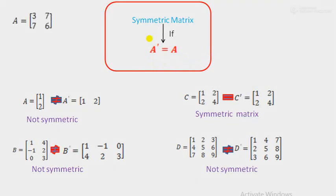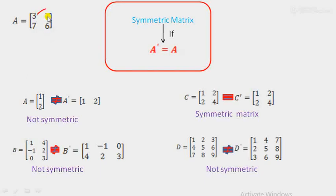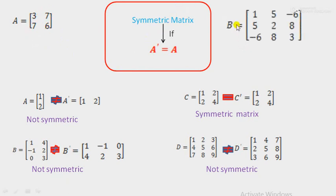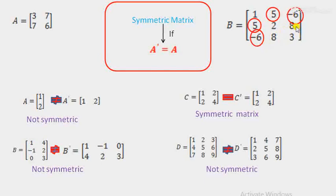Without verifying this condition, we can also check whether a given matrix is symmetric or not. In a symmetric matrix, diagonal elements can be any numbers, but opposite off-diagonal elements must always be equal. For example, in matrix B, diagonal elements can be anything, but opposite numbers are equal: five equals five, minus six equals minus six, and eight equals eight. Therefore matrix B is also a symmetric matrix.